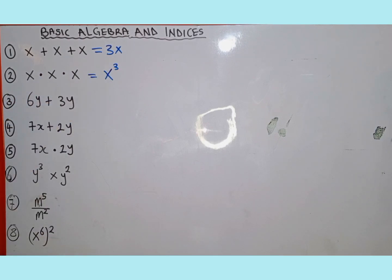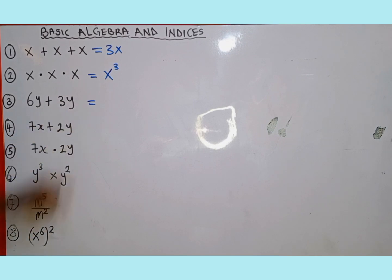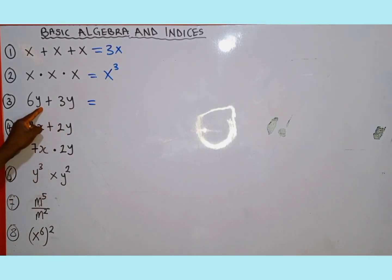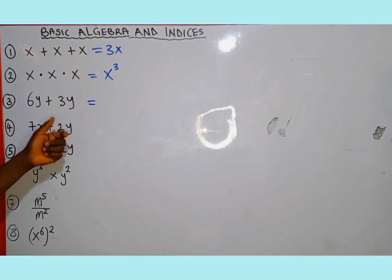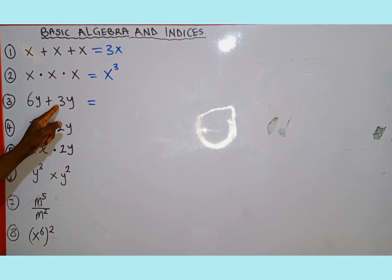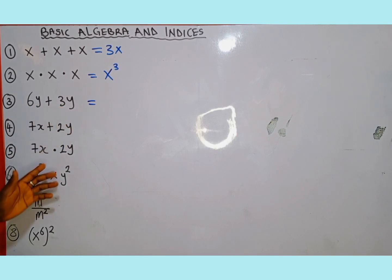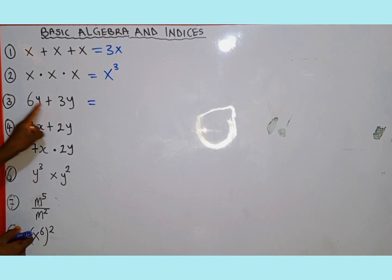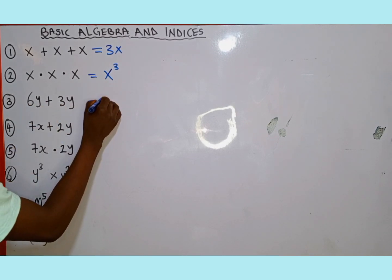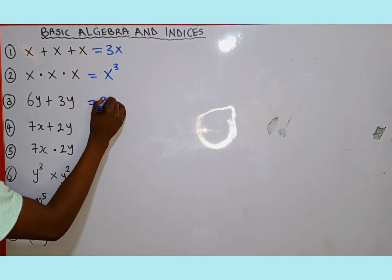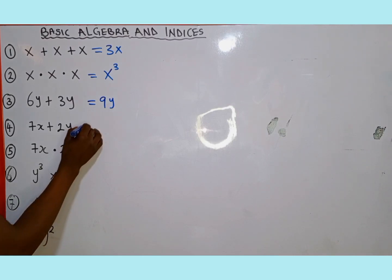Number three, we are given 6y plus 3y. We notice that 6 and 3 are constants, and y and y are variables. Since the variables are the same and the coefficients are constant, we are free to add them together: 6 plus 3 gives us 9, so the answer is 9y.